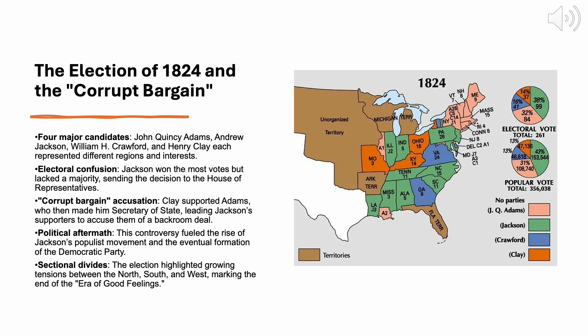John Quincy Adams, the son of former President John Adams and a highly respected diplomat, represented the interests of New England. Andrew Jackson, a war hero from Tennessee who had gained national fame after his victory at the Battle of New Orleans during the War of 1812, drew support from the South and West. William Crawford, the Secretary of the Treasury, had the backing of Southern Republicans and party insiders like Martin Van Buren. Henry Clay, the Speaker of the House and an advocate for the American System, represented the West and had long been a proponent of national economic development.